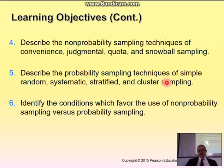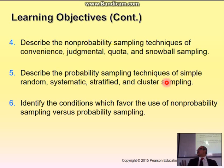Cluster sampling is when you take all customers and identify clusters. For example, from 1,000 companies using a telecommunication service, you randomly select four companies and study only those four, assuming they represent all 1,000. Or maybe you have 2,000 neighborhoods and you randomly select three or four neighborhoods to study. That's a cluster.